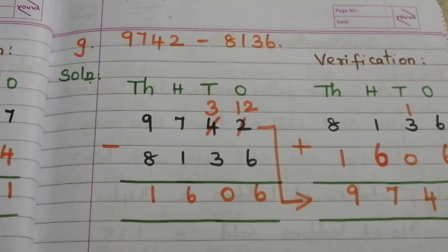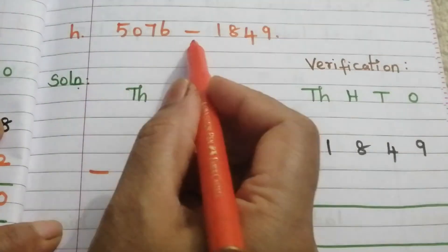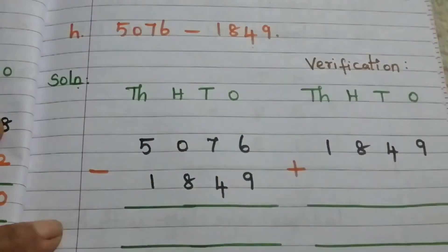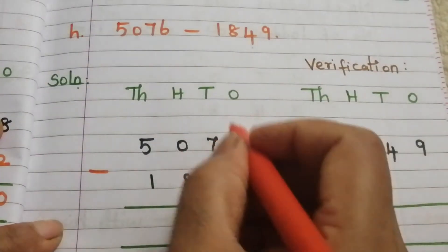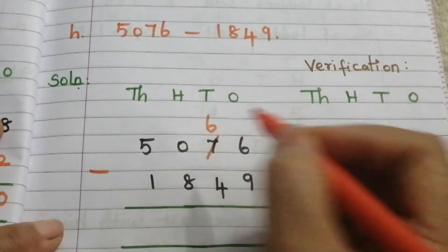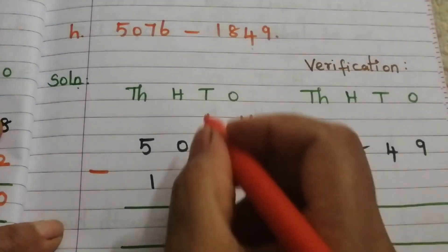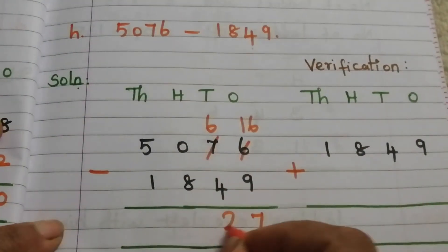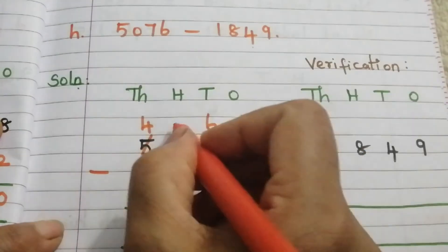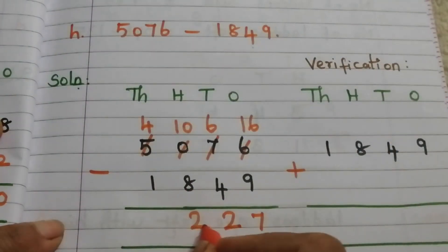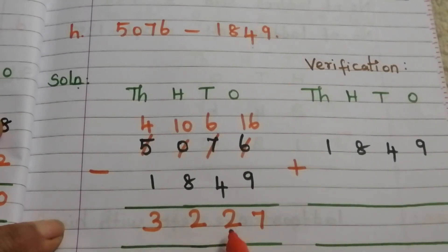Problem H — the last problem: 5076 minus 1849. Start from ones place. We can't subtract 9 from 6, so borrow from 7. 7 becomes 6 and 6 becomes 16. 16 minus 9 is 7. 6 minus 4 is 2. We can't subtract 8 from 0, so borrow from 5. 5 becomes 4 and 0 becomes 10. 10 minus 8 is 2. 4 minus 1 is 3. The answer is 3227.